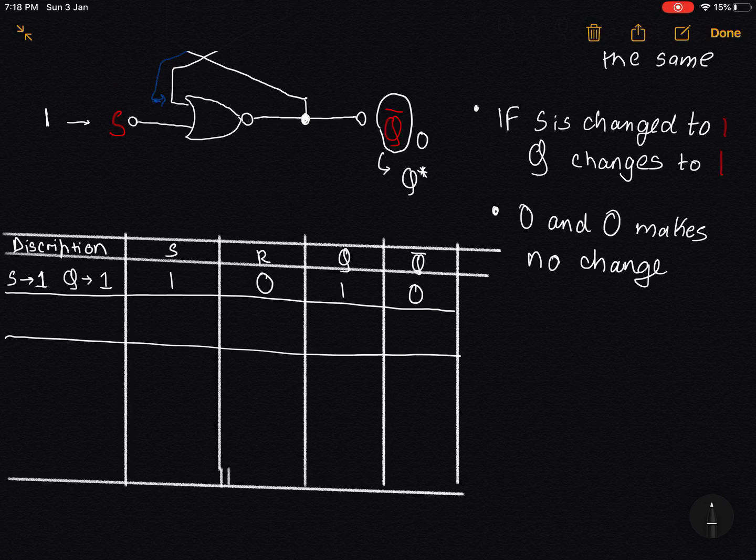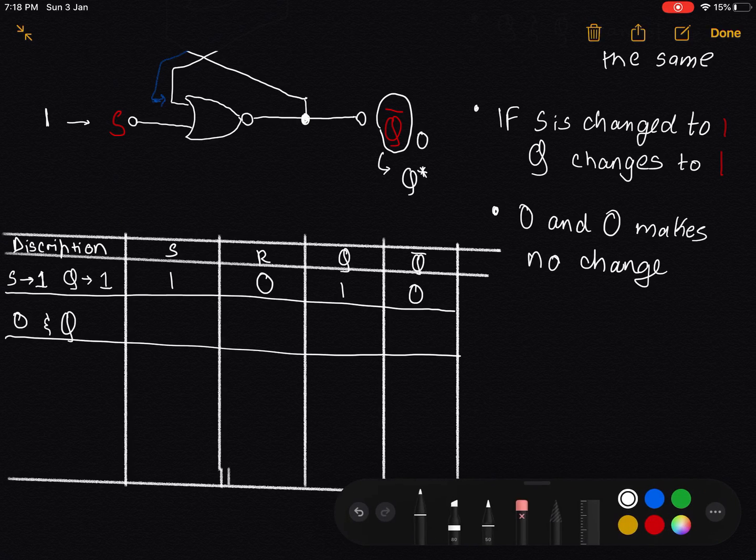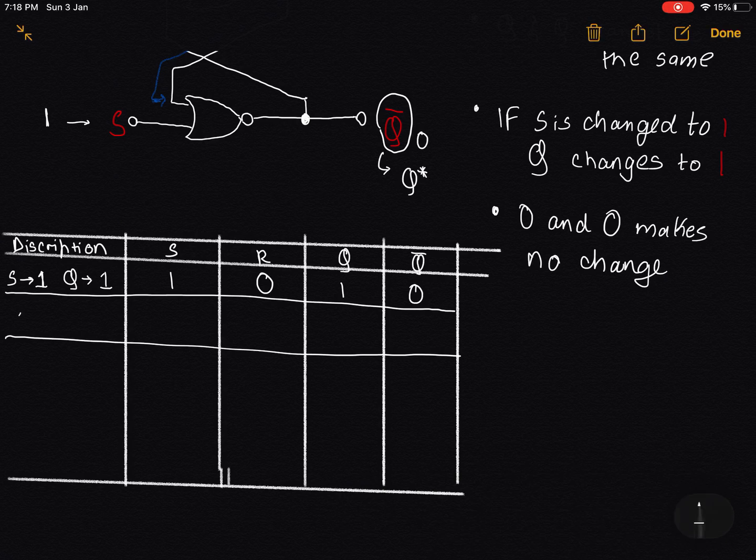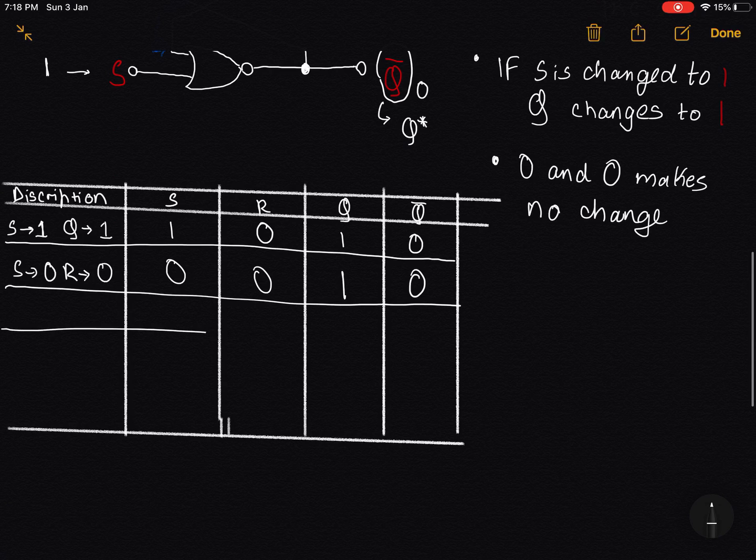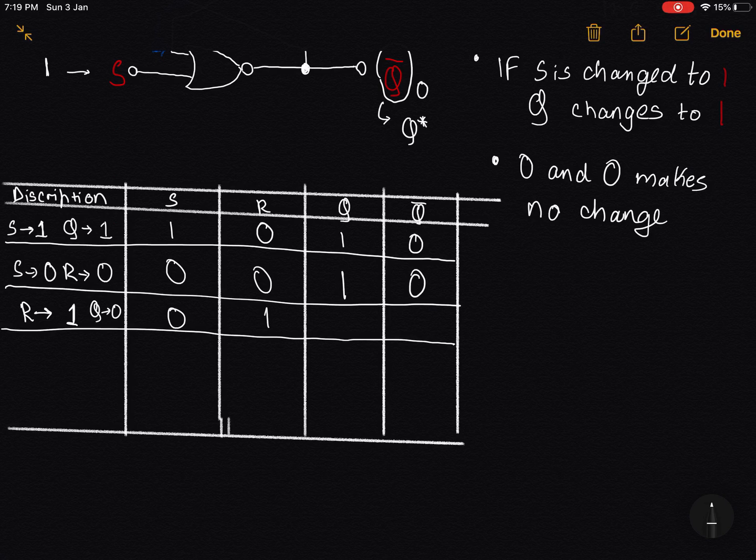The next case, we will use S and R to be 0 and 0. As I've told you last time, having S and R as 0 and 0 will make no change to the values of Q and Q complement. They will remain the same. Now when reset is true, R is 1. In this case, the value of Q changes to 0. Q becomes 0 because it resets the value.